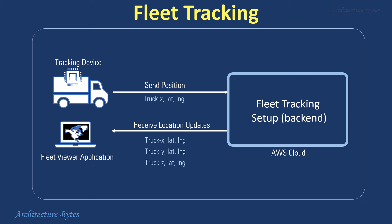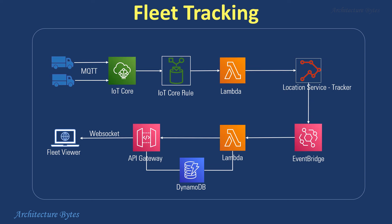The Fleet Viewer application receives location updates for the trucks in real-time from the backend fleet tracking setup and plots the location and movement of the entire truck fleet on a map. Location updates from the trucks are sent over MQTT to AWS IoT Core Message Broker to a specific topic. An IoT Core rule picks up the messages from the topic and invokes a Lambda function, which in turn sends the location updates to Amazon Location Service Tracker. The tracker saves the device location and generates a geolocation update event.